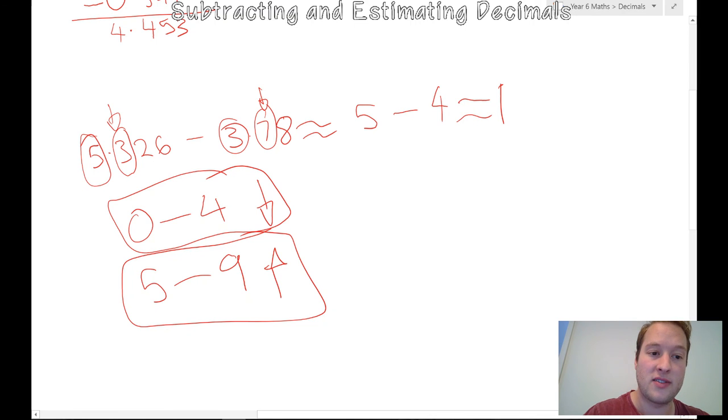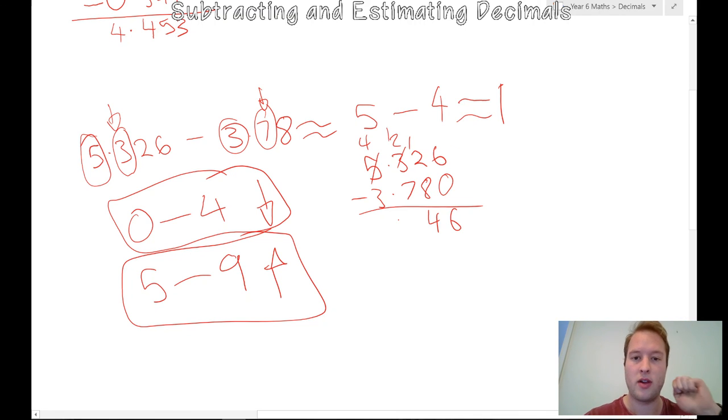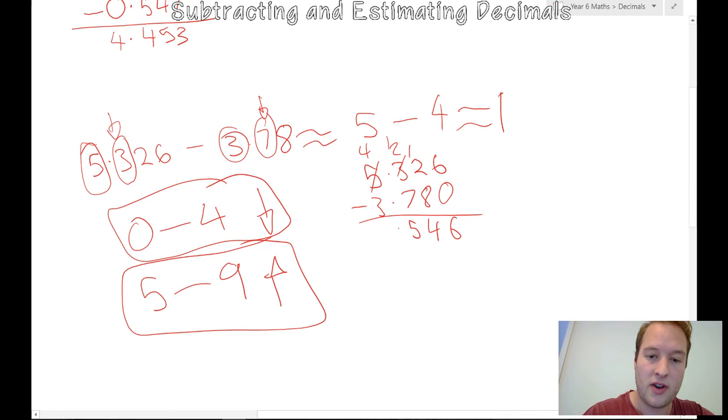So now if I actually do it, so that was 5.326 take away 3.78. I put in a zero so it makes it easier. So 12 take away eight is four. 12 take away seven is... 12, 11, 10, 9, 8, 7, 6, 5 is five, four. So my answer is 1.546. Is that close to one? Yeah, it is. It's only half a number higher. So that is how I estimate.